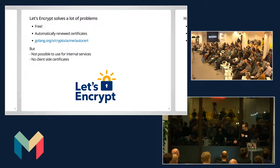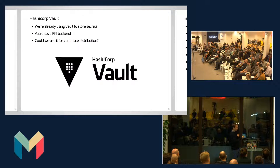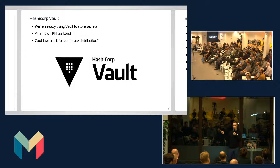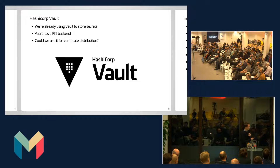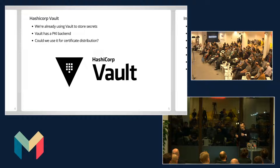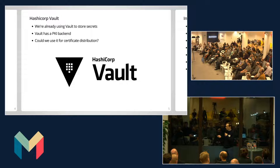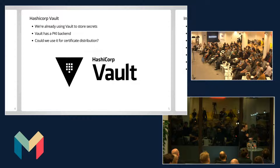This is a HashiCorp meetup. HashiCorp Vault — we're already using HashiCorp Vault for our secrets. And after the previous talk, you will have known very well how to deploy Vault as well. But Vault has a PKI backend. Not talked about a lot, but you can use Vault to issue certificates, both client-side and server-side. So could we use Vault to solve the problem of distributing certificates? Yes.